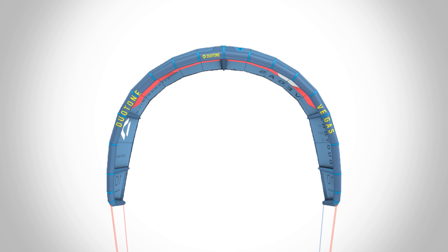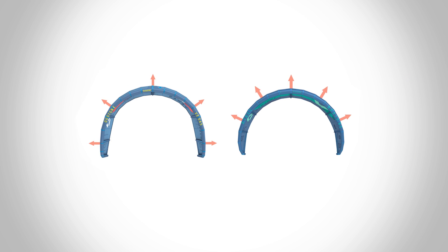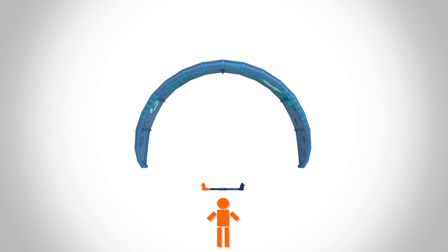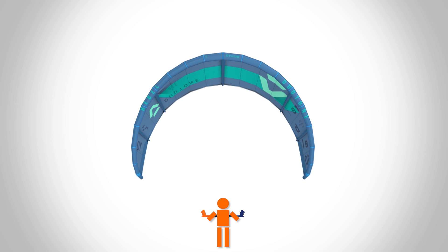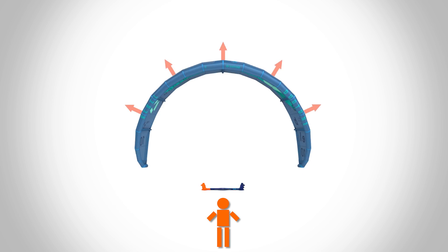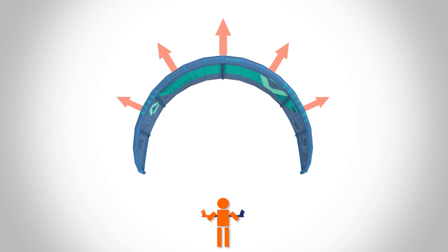A pure C-kite can fly with two centre lines and two steering lines connected on the corners. Looking at the forces when you move the bar in and out tells us a lot about the practical differences between flat and C-shaped kites. With a flat kite, when you pull in the bar, the kite angles away from you. Because the kite is so flat, the forces across the wing act away from the rider, generating lots of extra pull simply by pulling in the bar.